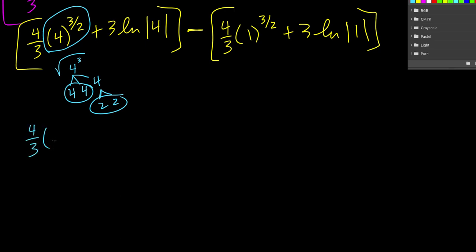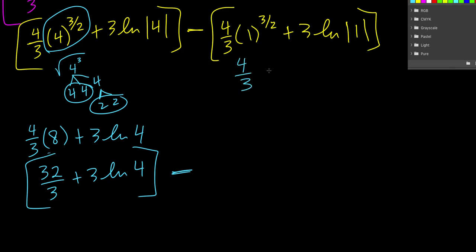So we get 4 thirds times 8 plus 3 natural log of 4 because the absolute value of 4 is just 4. If we do 8 times 4, we get 32. So we get 32 thirds plus 3 natural log of 4. So that's that first pair of brackets. We get a minus sign. 1 raised to anything is going to give us 1. So this is just 4 thirds. And then natural log of the absolute value of 1 is the same as natural log of 1. Natural log of 1 is just 0. And 0 times 3 is 0. So this entire bracket just becomes 4 thirds.